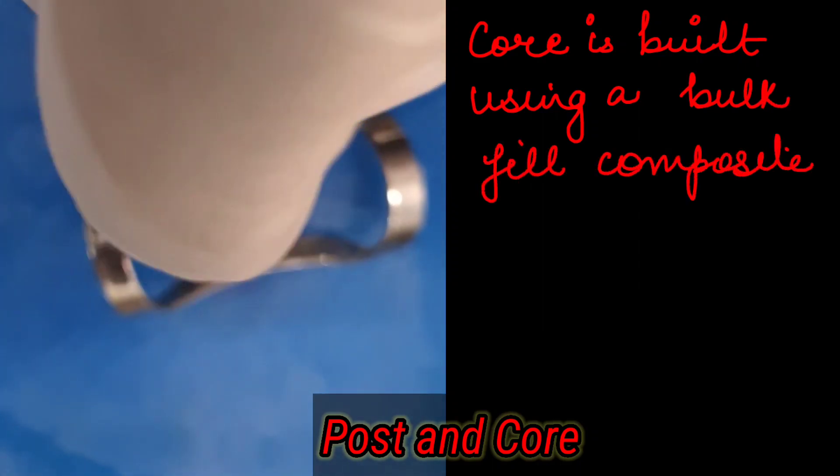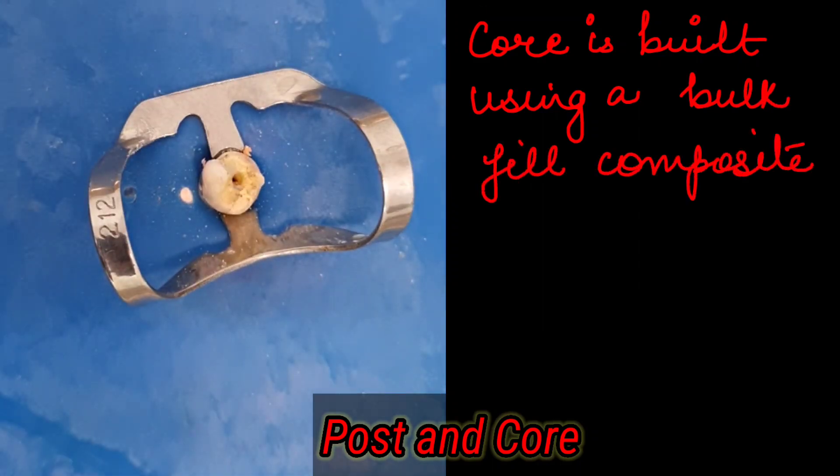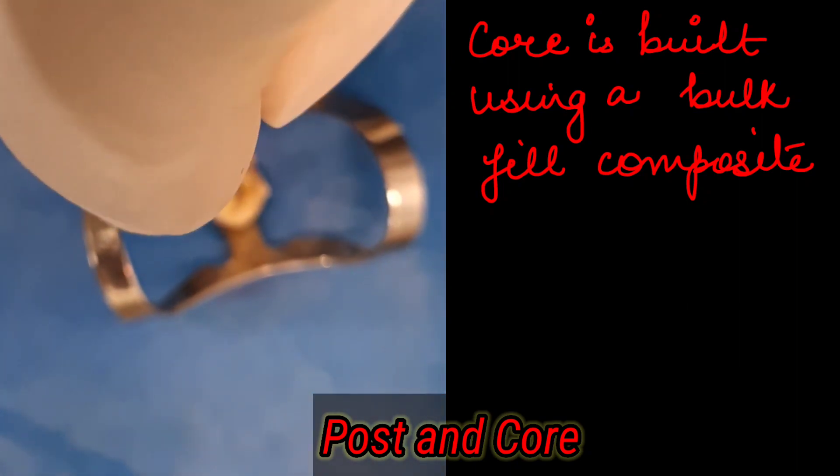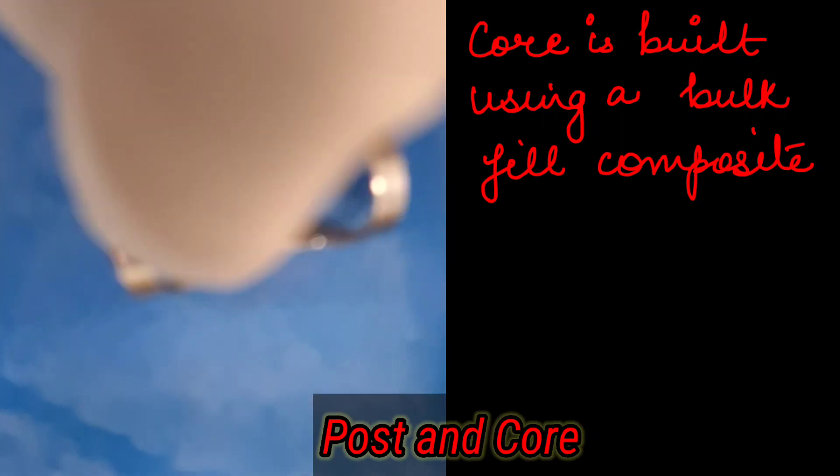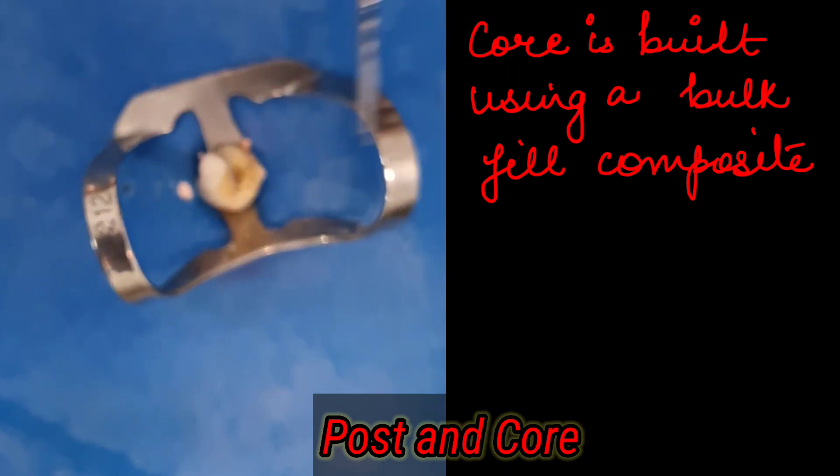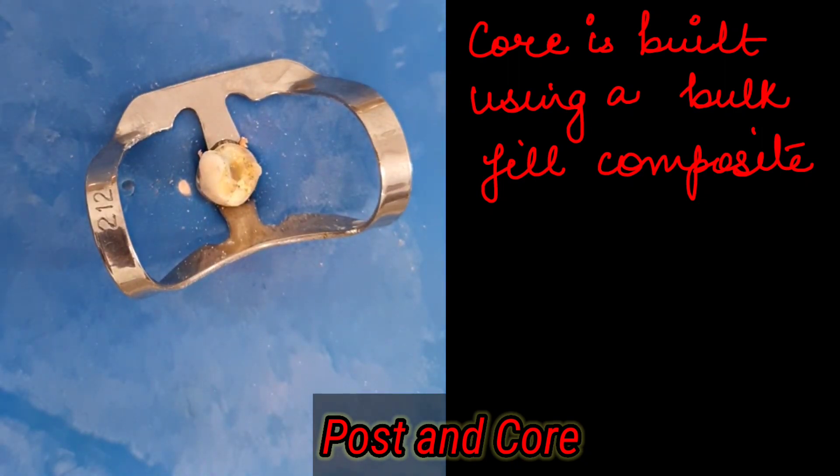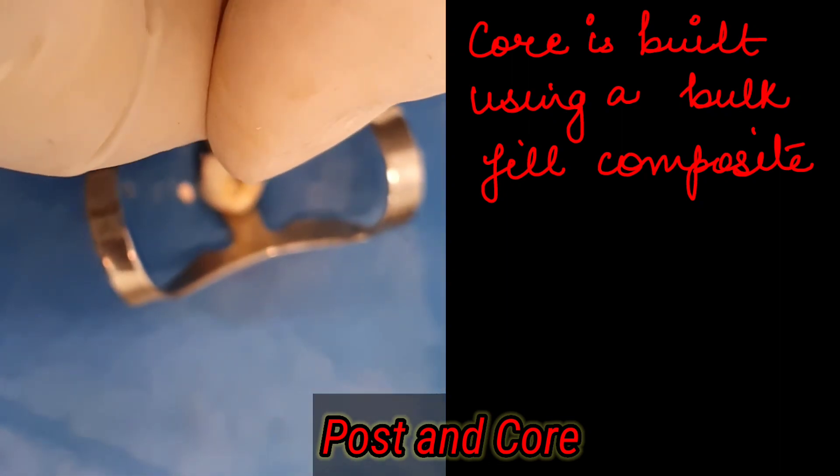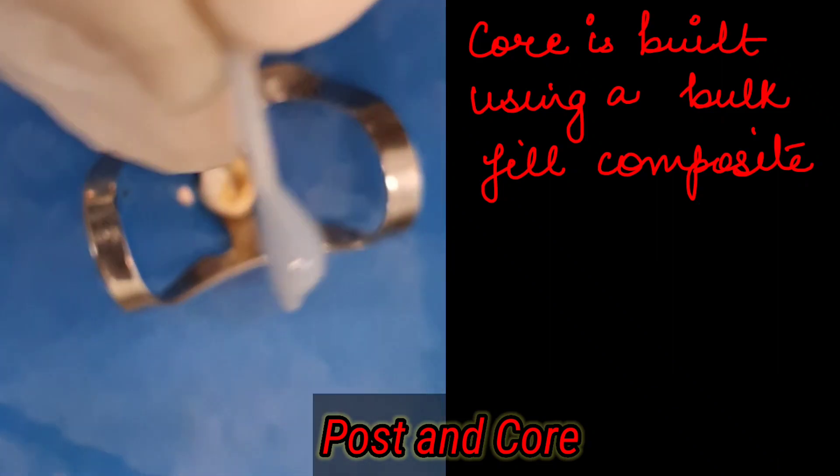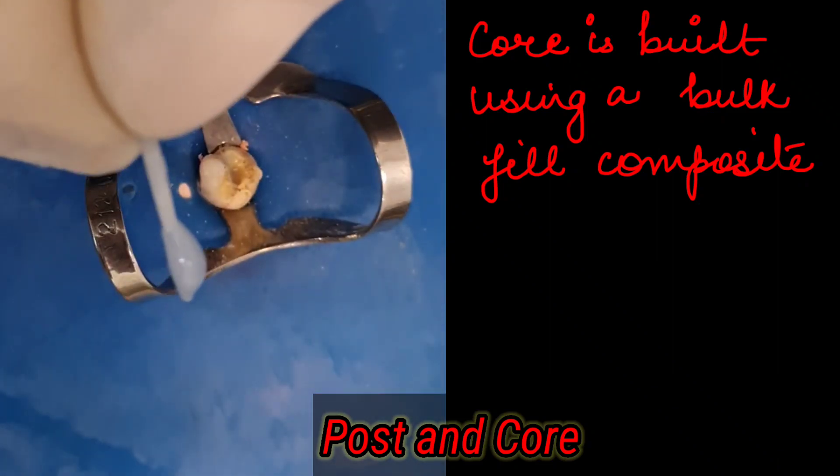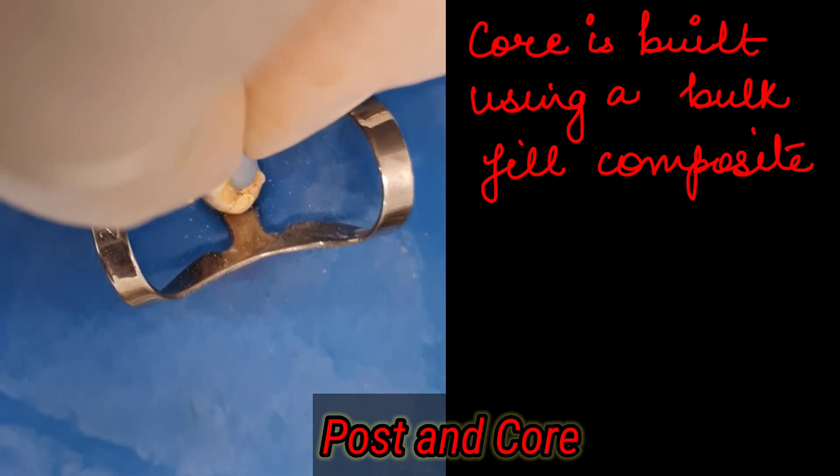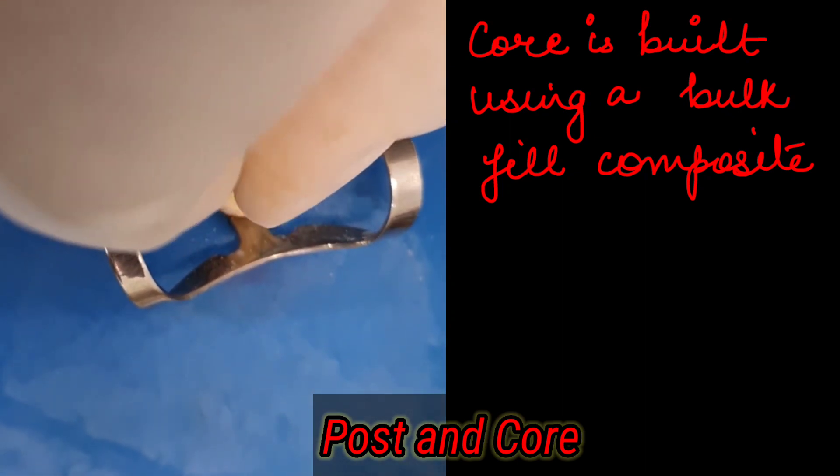We measure the fit, we check the fit of the fiber post and we take the build-up material and fill it inside with the help of the post so that there is no gap or no space that is left. On this fiber post we are using a core build-up material using a bulk fill composite.